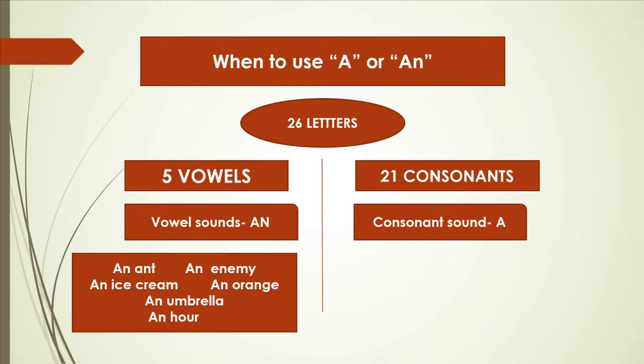Then enemy, an ice cream, an orange, an umbrella. As you can see, a, e, i, o, u are our five vowels. And lastly there's hour. This word hour is pronouncing like our, which is a vowel sound. We are saying hour, that's why we are using an before hour.